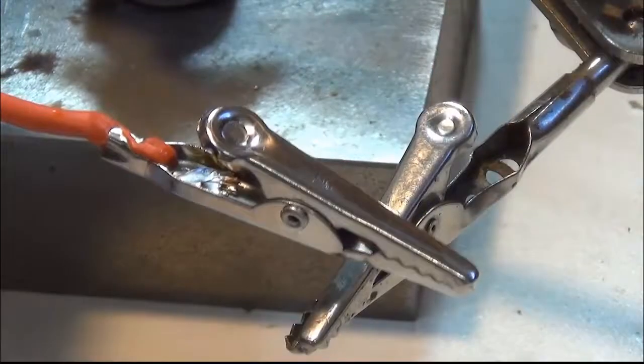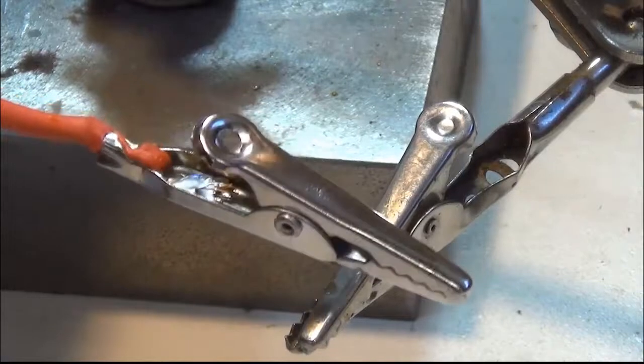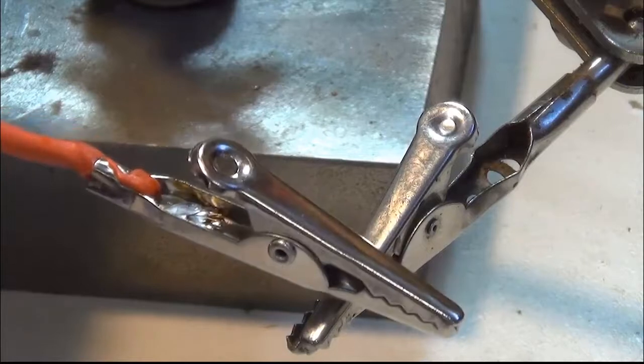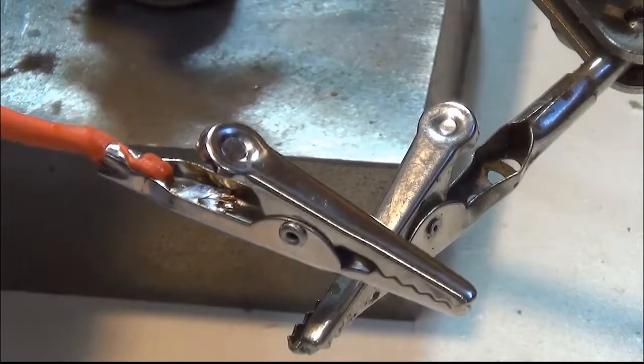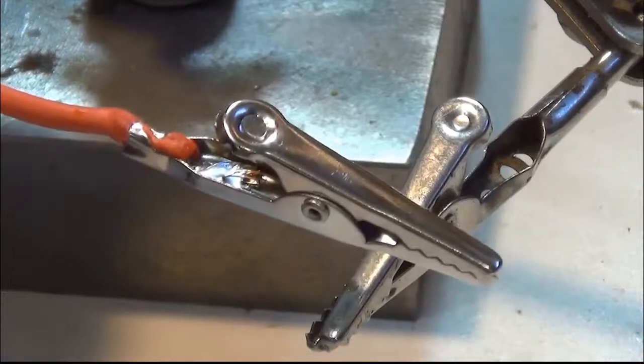This is what the finished solder connection should look like. It's flowed out and bonded well to the alligator clip and wicked well into this wire. Now we have a good quality clip lead and this should give us no problems doing our work.